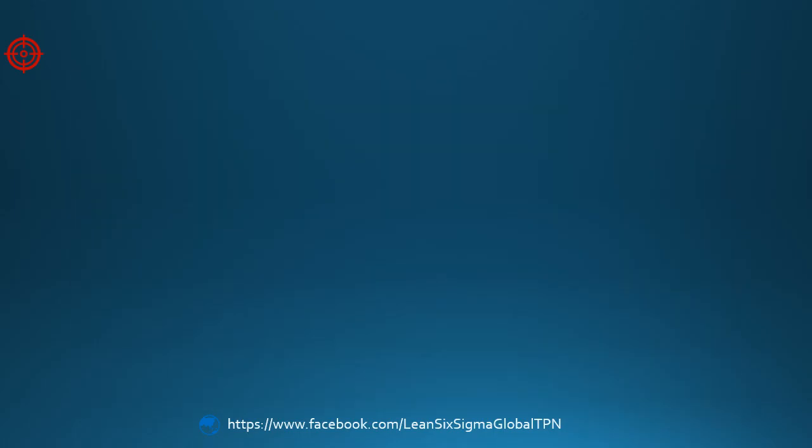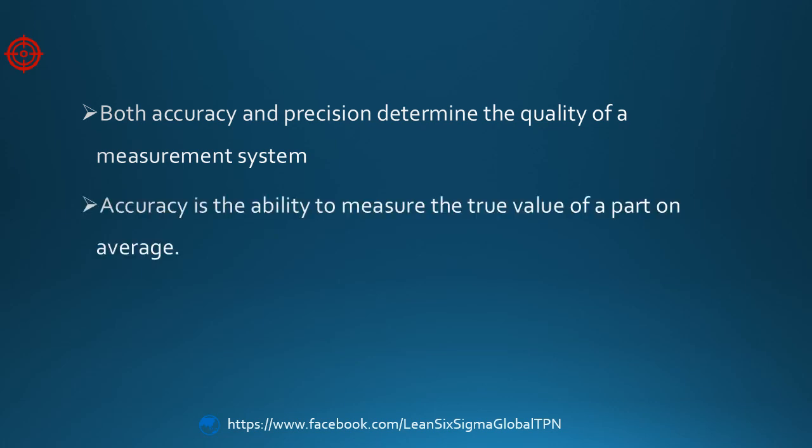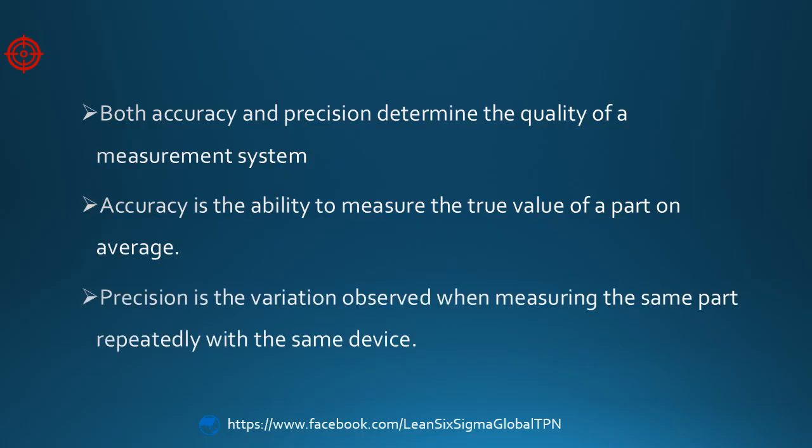Let's review. Both accuracy and precision determine the quality of a measurement system. Accuracy describes the ability to measure the true value of a part on average, while precision describes the variation observed when measuring the same part repeatedly with the same device.